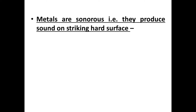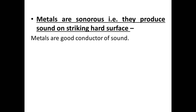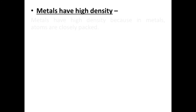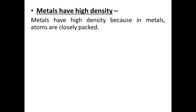Next property is sonorousness. Metals are sonorous — they produce sound when struck against a surface. Metals are good conductors of sound. For example, the ringing of a school bell — the bell is made of metal and when it strikes a surface, it produces sound.